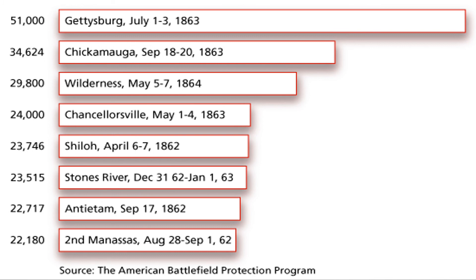Gettysburg over three days saw over 50,000 casualties. Antietam is the bloodiest single day in U.S. history — September 17, 1862 — with almost 23,000 casualties in just that one day.